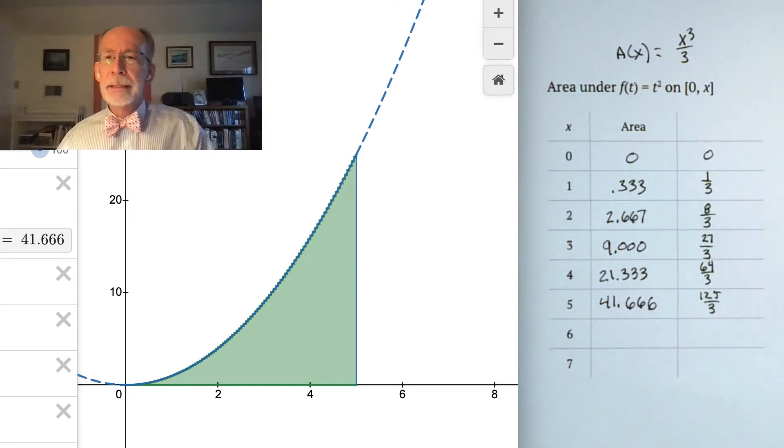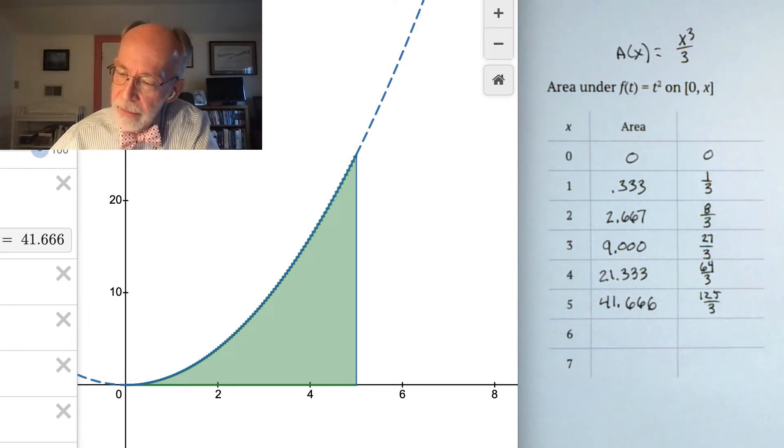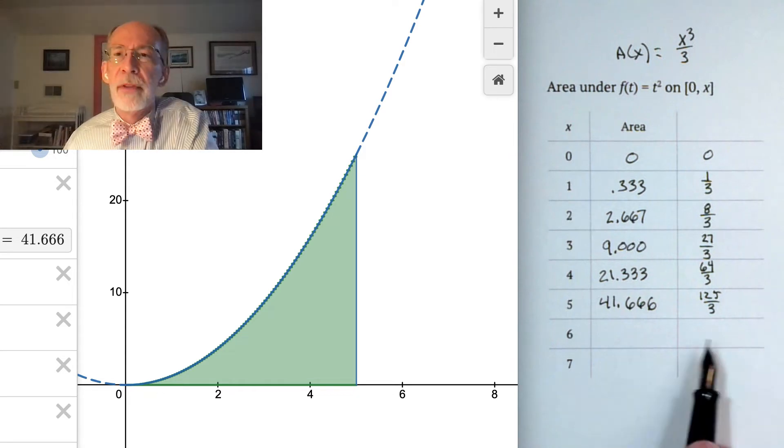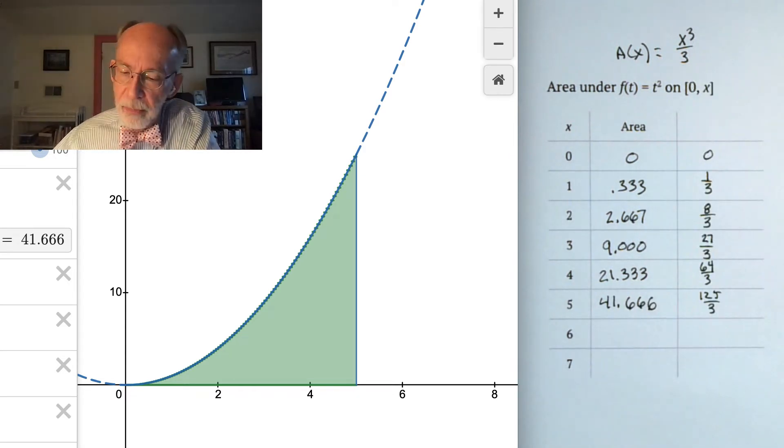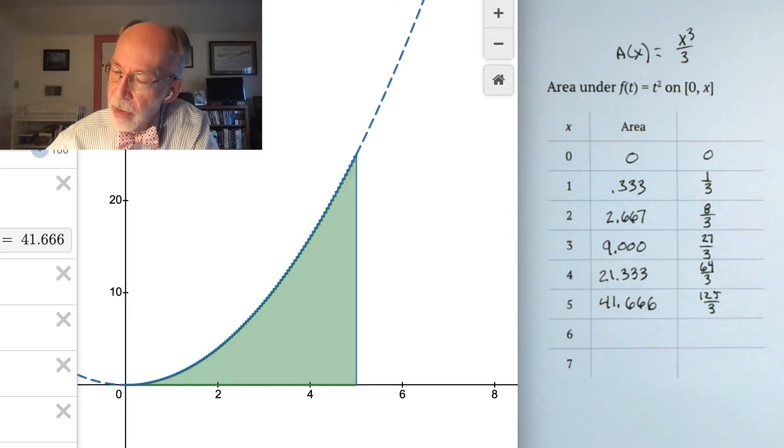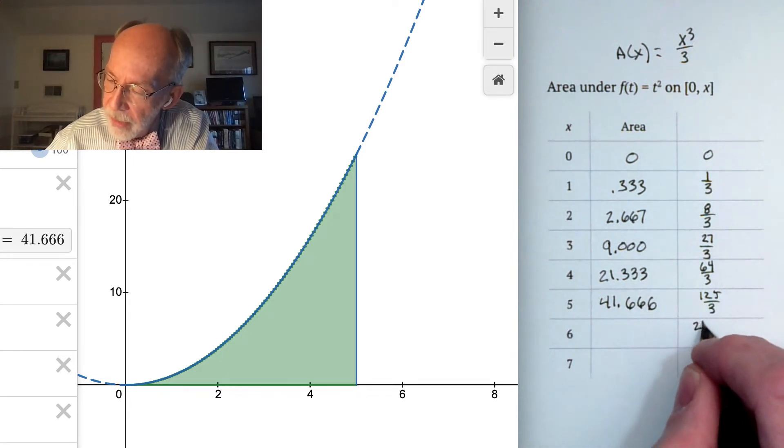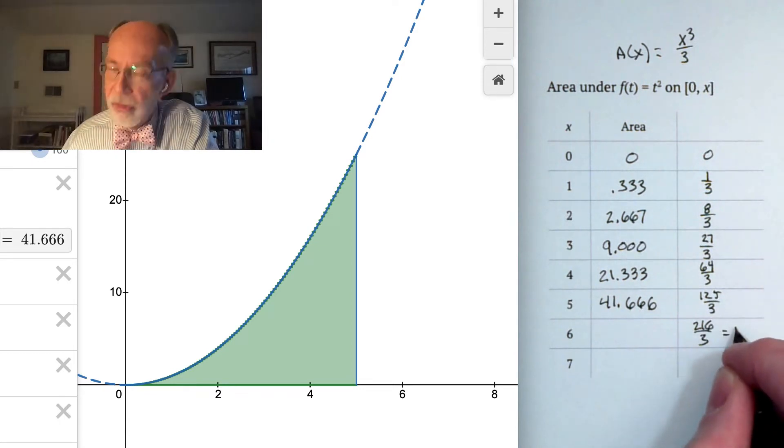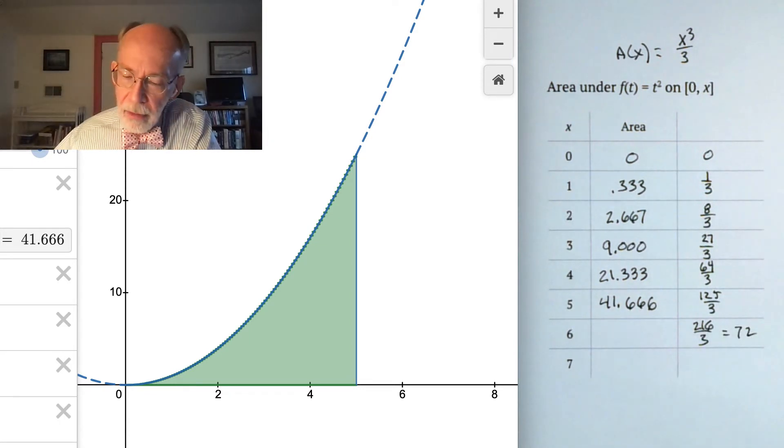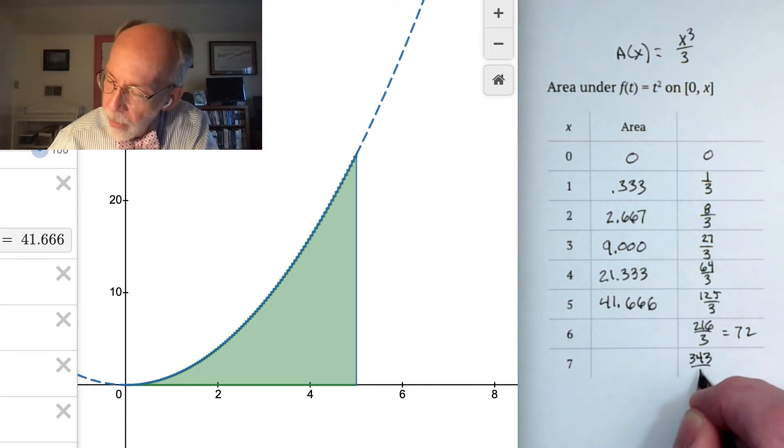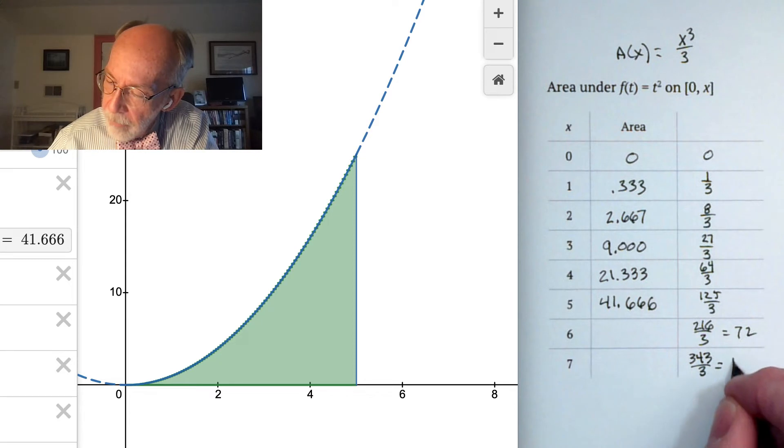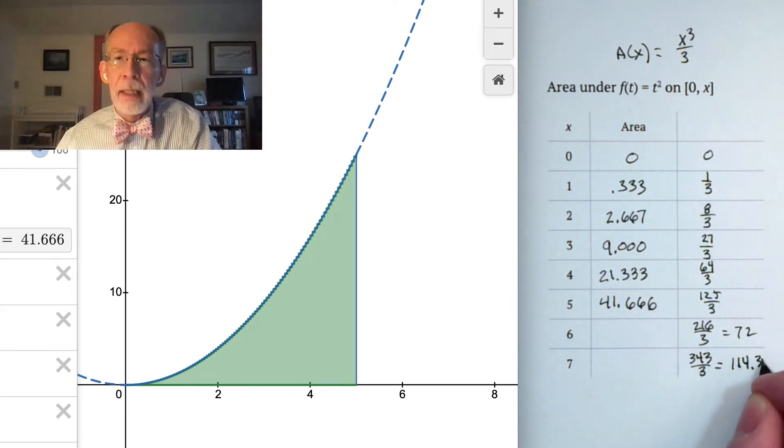Well, let's see if this pattern continues. Only let's try it from the other end. Let's make a prediction. So if x were 6, and if this relationship holds up, then we should expect 6 cubed over 3, which is 216/3, or 72. And for 7, we would expect 343/3, or about 114 and a third.